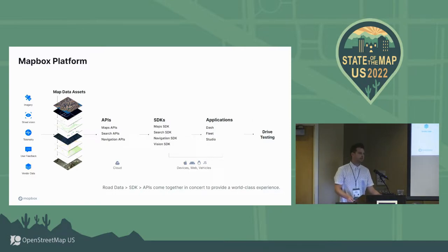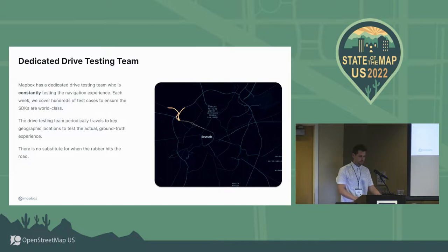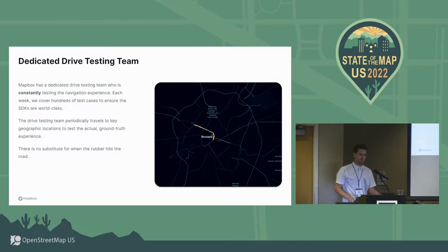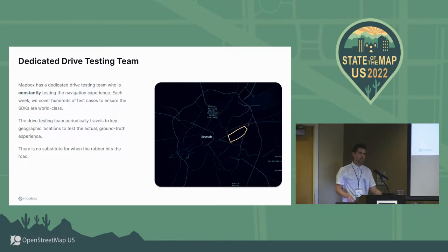We developed an internal app that we use for testing all of these components and different layers and data pieces coming together. We have a dedicated drive testing team at Mapbox, which is fairly unique. We're constantly testing all of those components. Every single week, we're doing hundreds of use cases, driving hundreds of kilometers to see how we're doing and how it's performing.